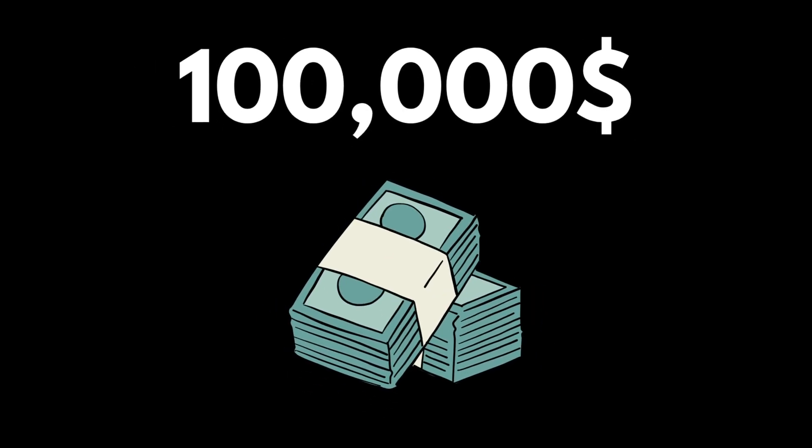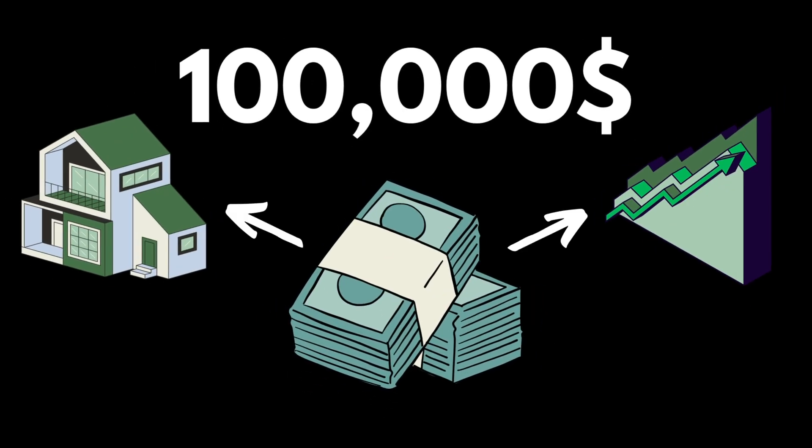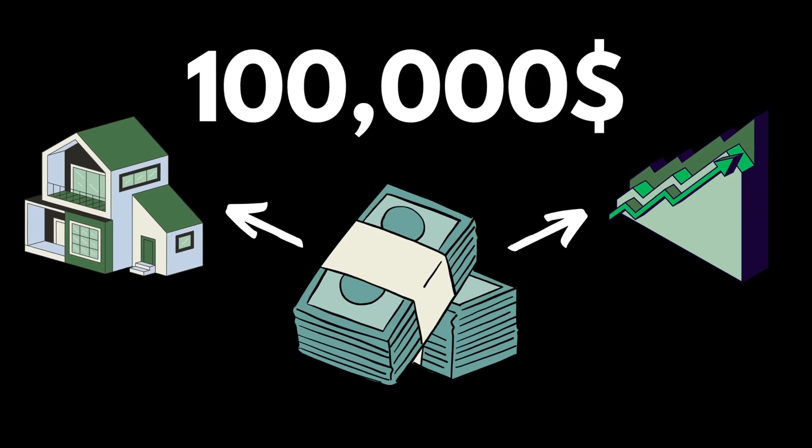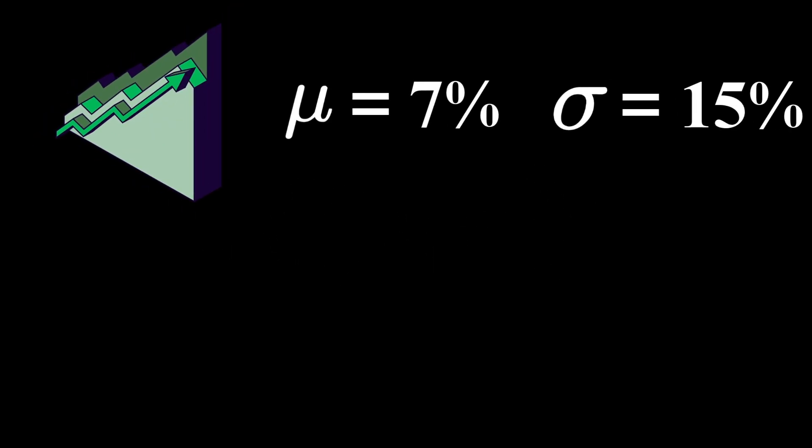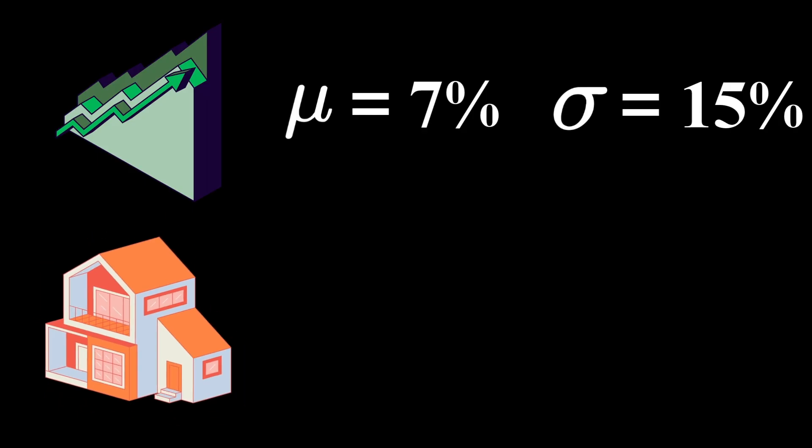So let's say we have $100,000 and have to make the decision what to invest it in. Let's start off really simple and just look at one random variable, the returns. A normal distribution is described through two variables, the mean and the standard deviation. For annual stock market returns, we can assume those to be 7% and 15%, and for our real estate option to be 4% and 2%.